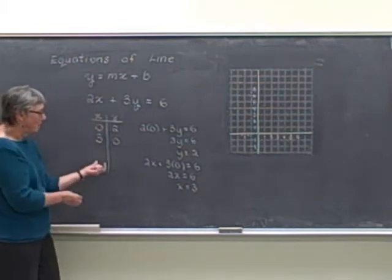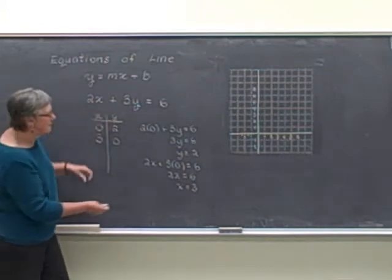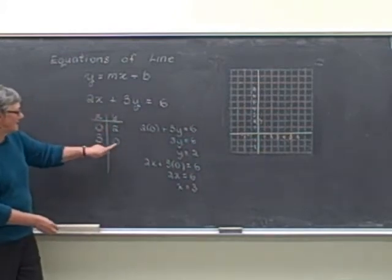Now I only have two points here, but let's graph those. So I'm going to graph the point 0, 2. So 0, 2. And the point 3, 0.